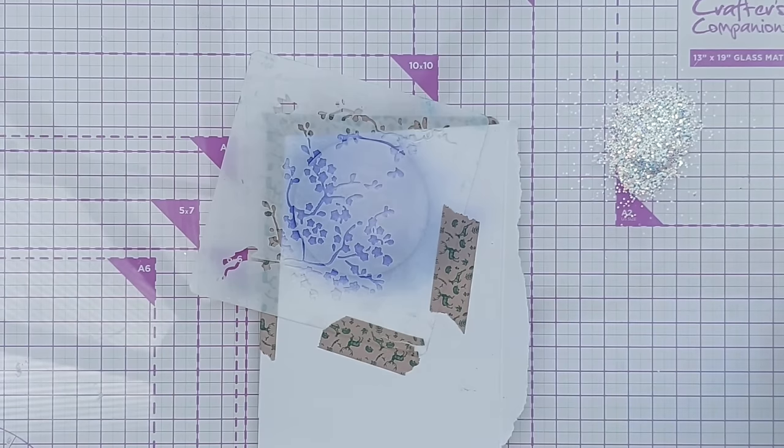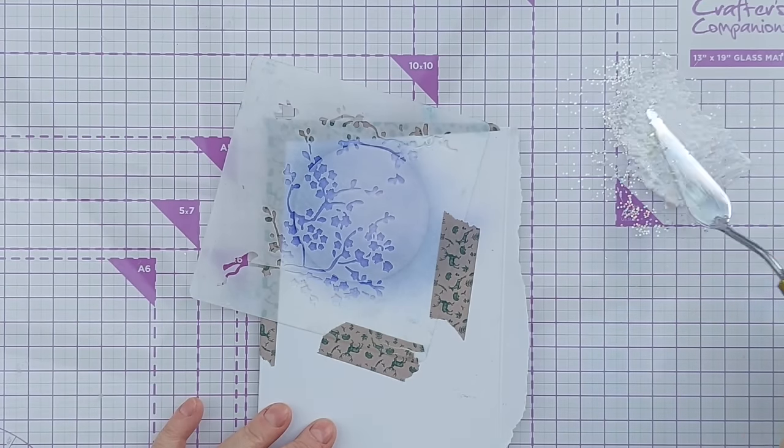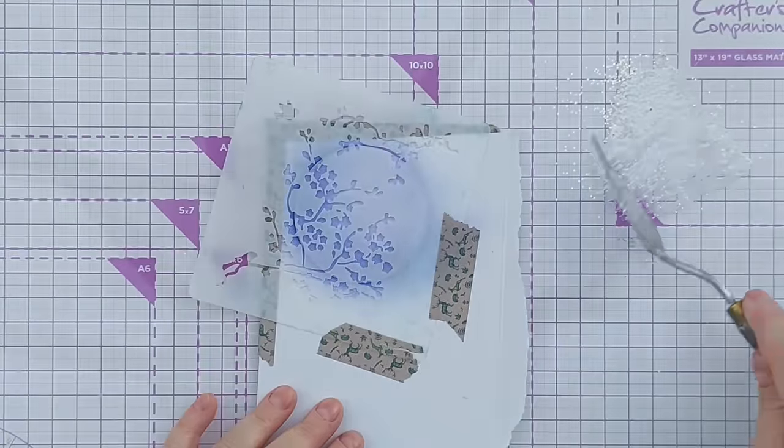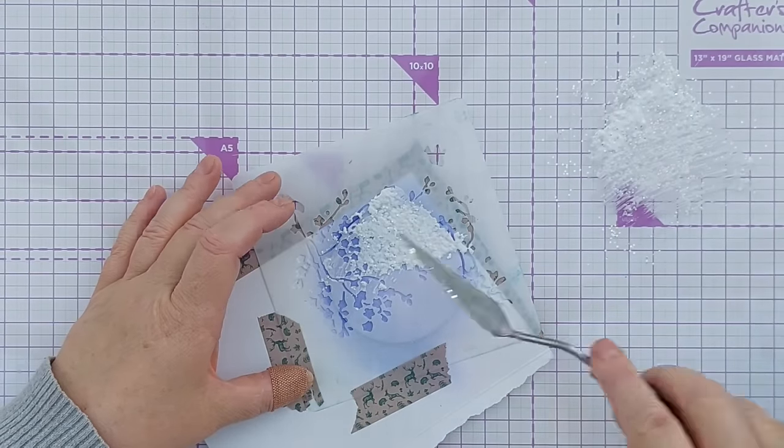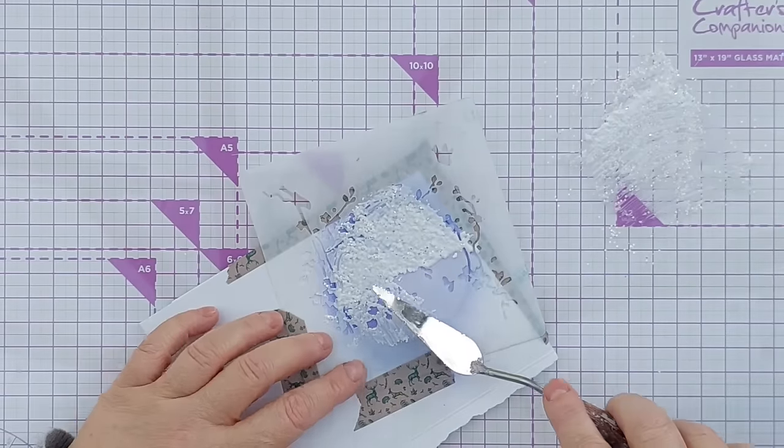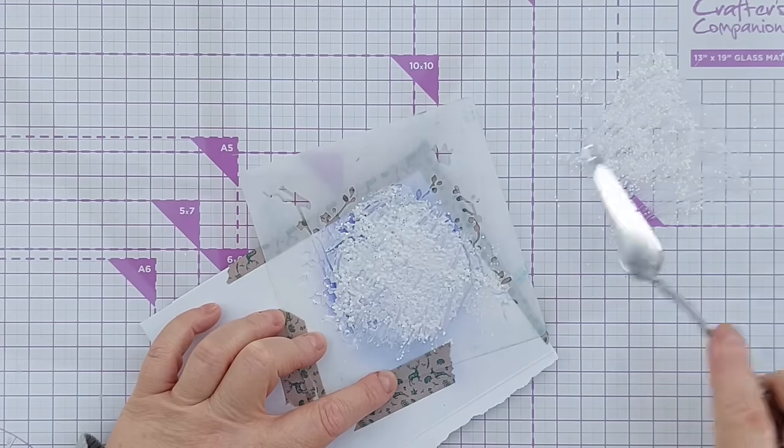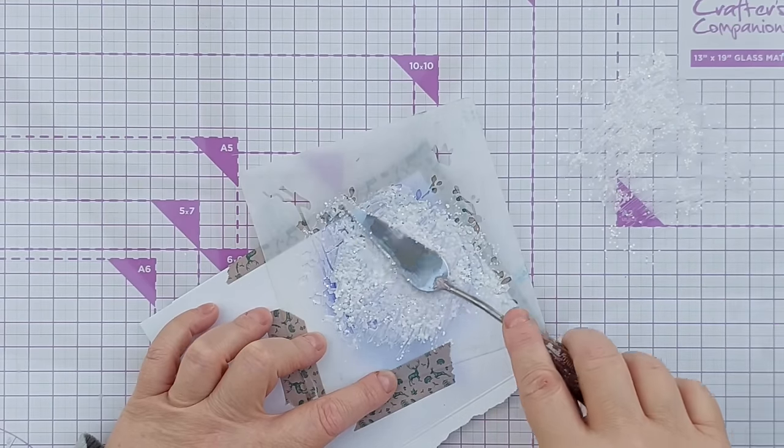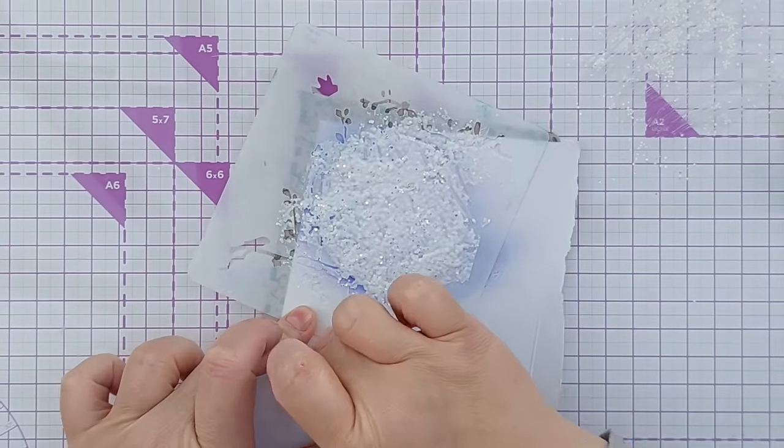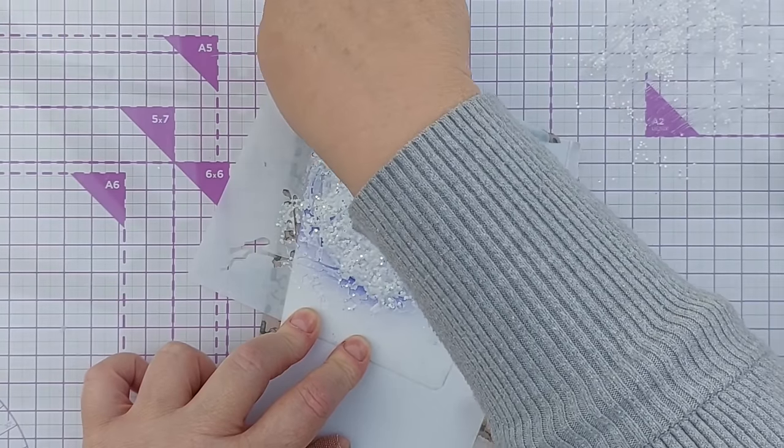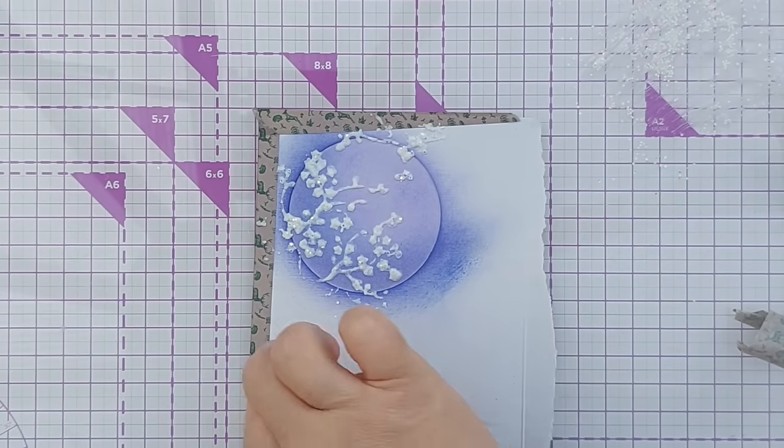Basically mix some PVA with some glitter and I've managed to reclaim my regular spatula from my daughter. Now I'm going to carefully spread it through my stencil, trying not to squish it under the stencil. And I'll take this washi tape off carefully and carefully lift this. And I'm going to take this mask off now.